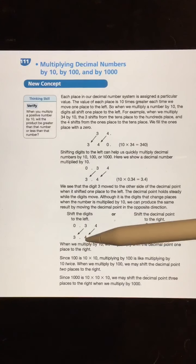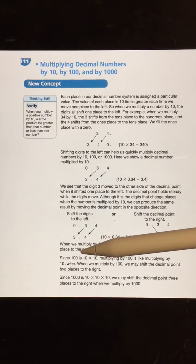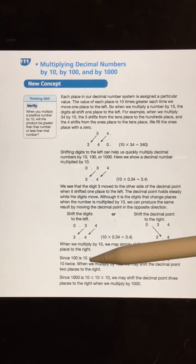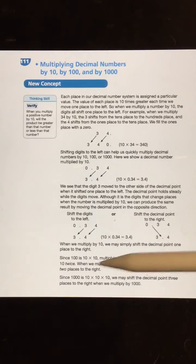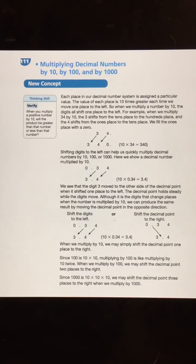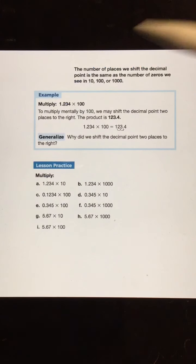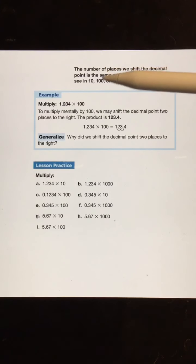When we multiply 100, it is like multiplying 10 times 10. So when we multiply 100, we shift the decimal point 2 places to the right, and then when we multiply by 1,000, which is 10 times 10 times 10, we shift the decimal point 3 places to the right. The number of places we shift the decimal point is the same as the number of 0s we see in 10, 100, or 1,000.